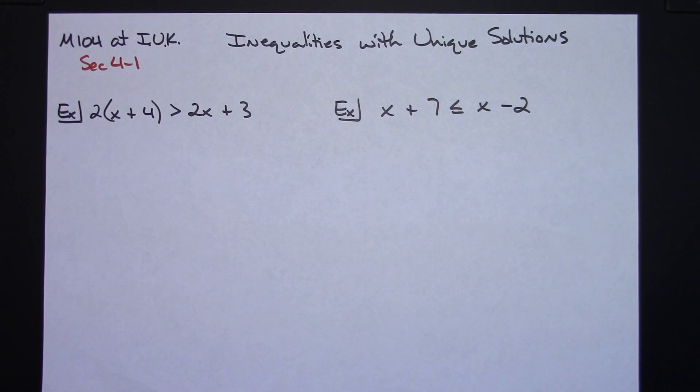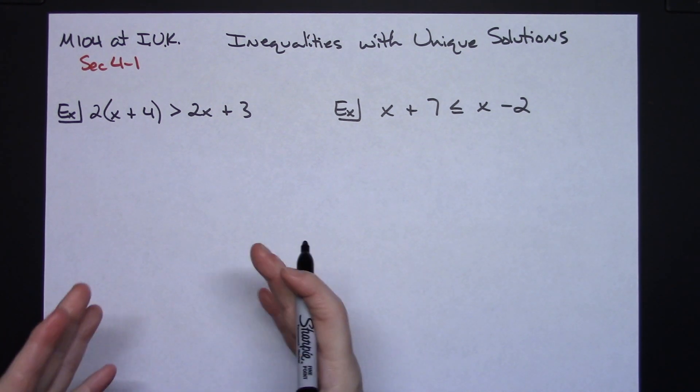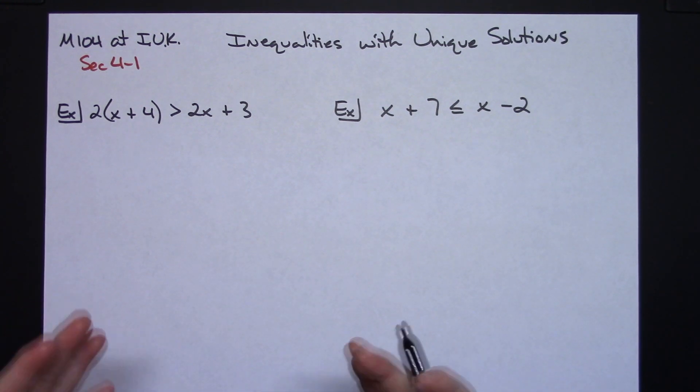Now initially if you're just not thinking and you start an inequality problem and you're trying to solve it, you're not necessarily going to know ahead of time that you're going to get one of these unique solutions. You're just going to start working it and then once you work it out and see what happens with the math, you're going to realize that you have one of these unique solutions.